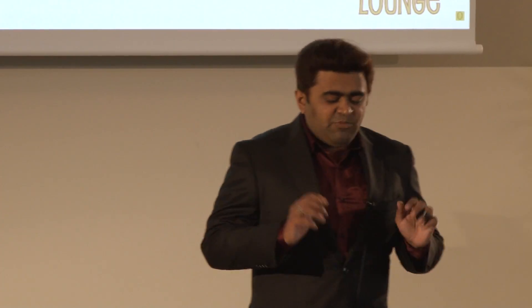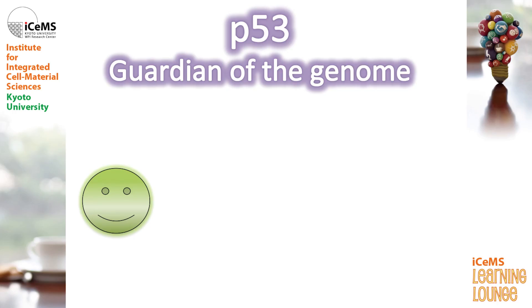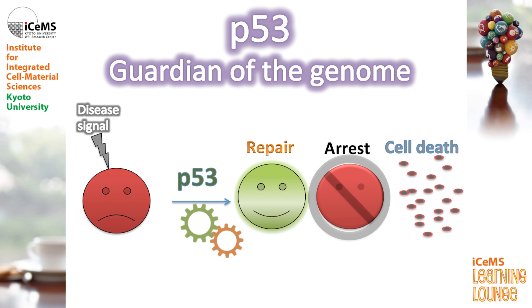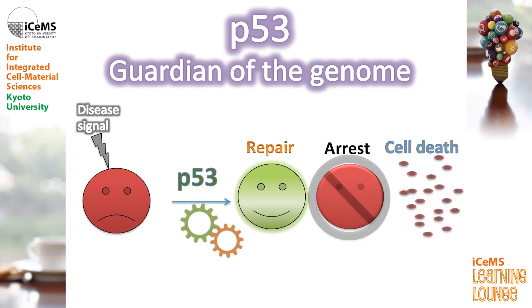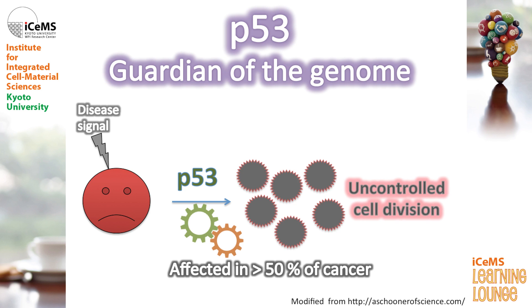These genes are called guard genes or caretaker genes. Let me introduce the most important caretaker, which is popularly known as guardian of the genome — that is P53. Imagine this is our cell, the little smiley, very happy. And when a disease signal happens, what P53 does is start a mission to either repair them, or if it's irreparable, arrest them. If there's no hope, it causes cell death. So what happens when P53 is not present or is blocked — like by the oncogene called E6 — that results in cancer, which is uncontrolled cell division. In fact, 50% of cancers are known to have P53 affected.